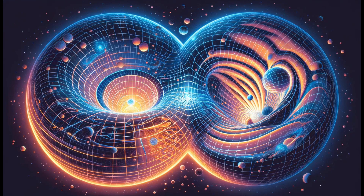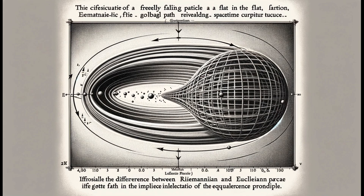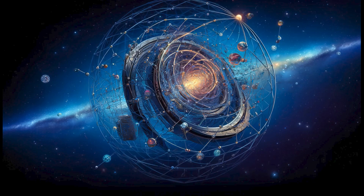An object in motion remains in motion unless acted upon by a force. Globally, however, its path reveals the curvature of spacetime dictated by Riemannian geometry, which accurately models the effects of gravity not as a force, but as changes in the structure of spacetime. This analysis highlights the deep connection between the geometric representation of spacetime and the physical effects of gravity, demonstrating the necessity of the Riemannian approach to accurately describe the structure of the universe under the influence of mass and energy.